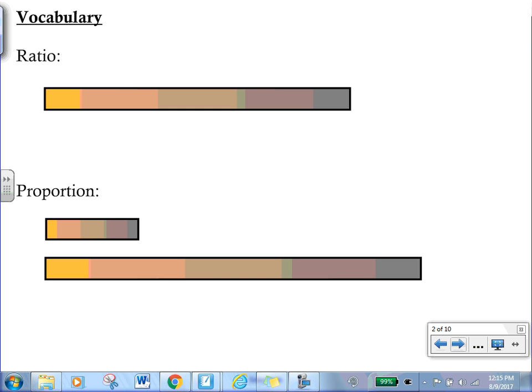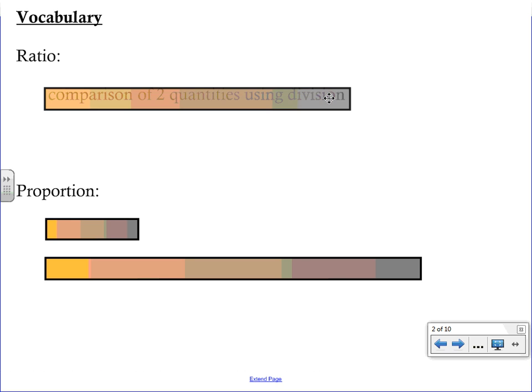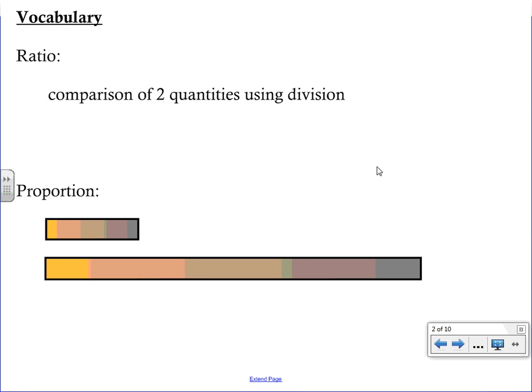We're going to begin with some vocabulary that you'll be using during this proportional reasoning unit. The first is a ratio. A ratio is probably something you've heard of before. It is simply a comparison of two quantities using division.